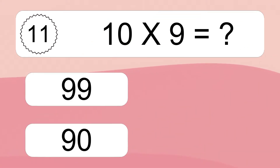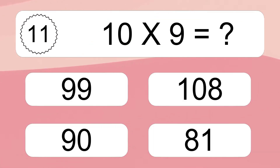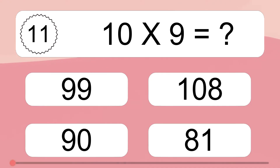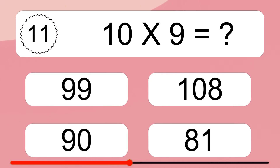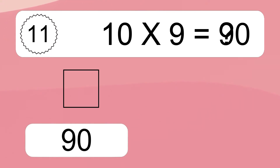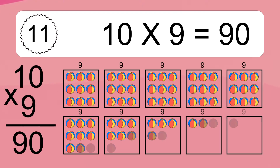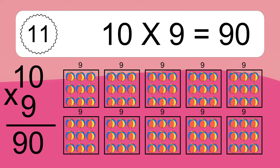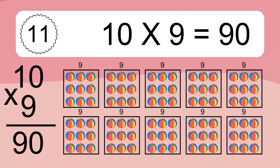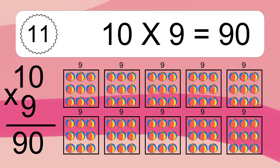10 times nine equals what? 90. We have 10 boxes and each box has nine colorful balls inside. If you count all the balls in all the boxes together, you will have 10 times nine balls. This equals 90 balls.